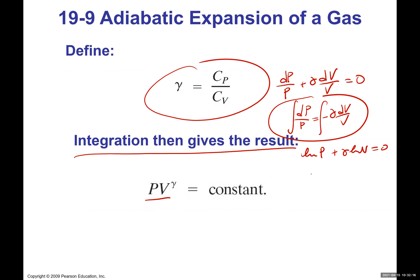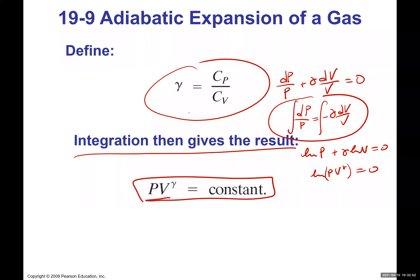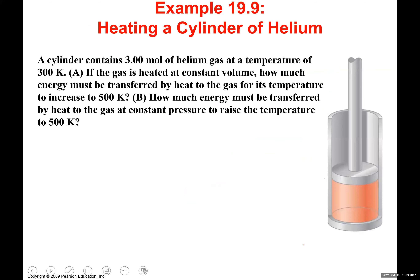So for the adiabatic process, p·V^gamma = constant, where gamma = Cp/Cv. This is the key equation for adiabatic processes. From integrating dp/p = -gamma·dV/V, we get ln(p·V^gamma) = 0, meaning p·V^gamma equals a constant. This is in contrast to isothermal processes where pV = constant.